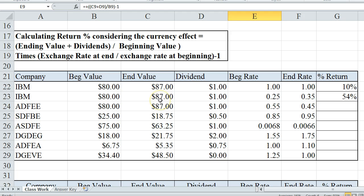So here we have a number of companies and stock purchases. For example, if we buy IBM and we have a beginning rate and ending rate of the currency that are equal, there's going to be no currency effect. So when I create the formula here,